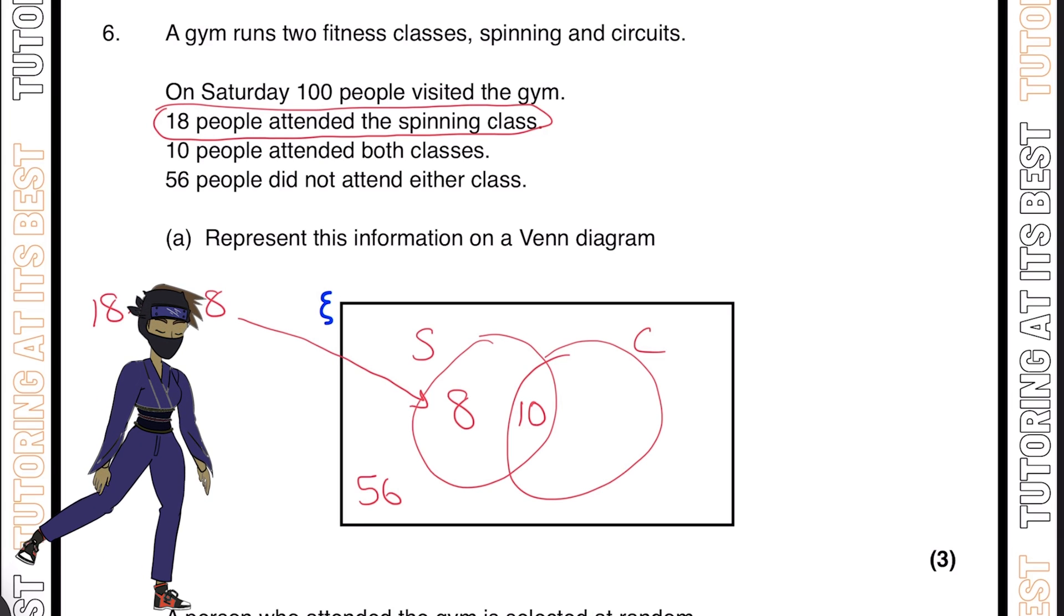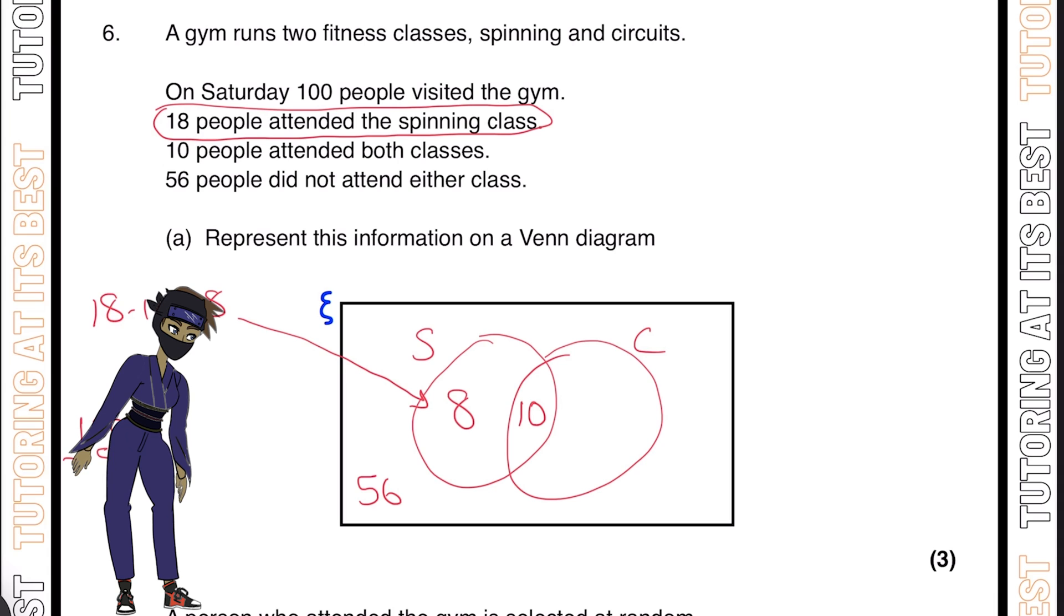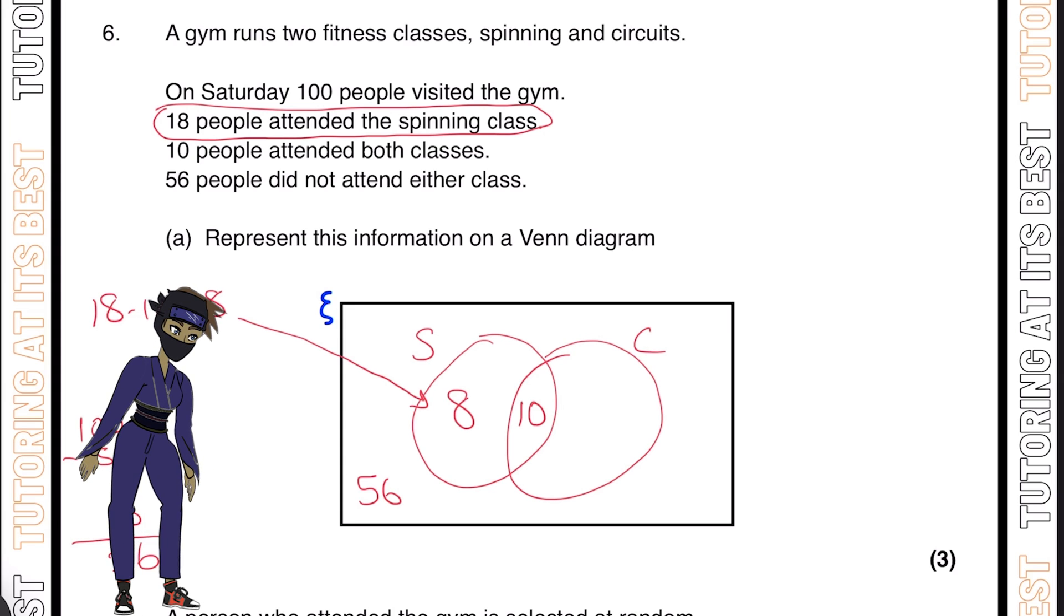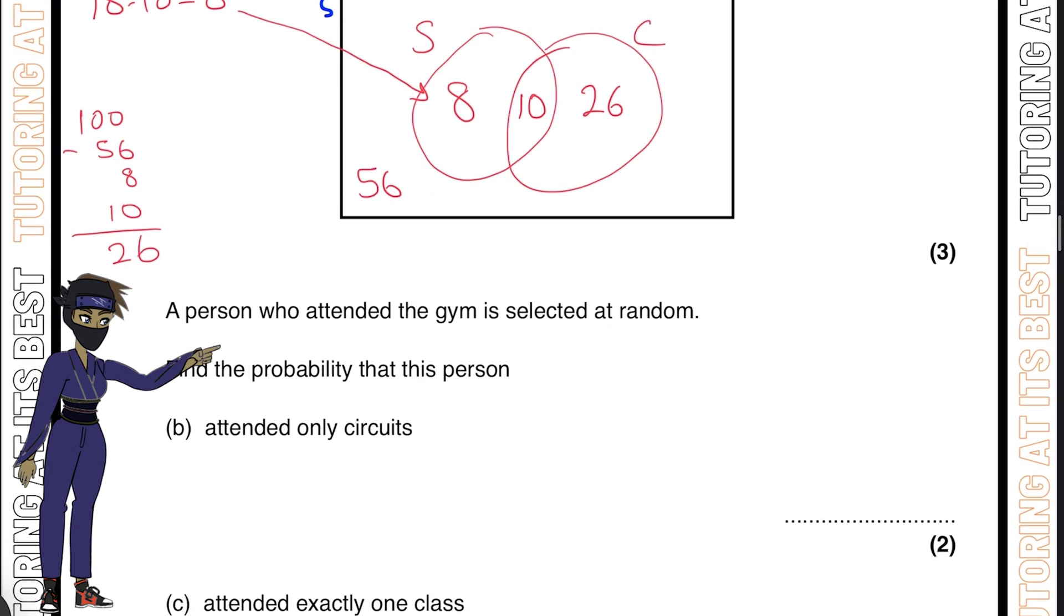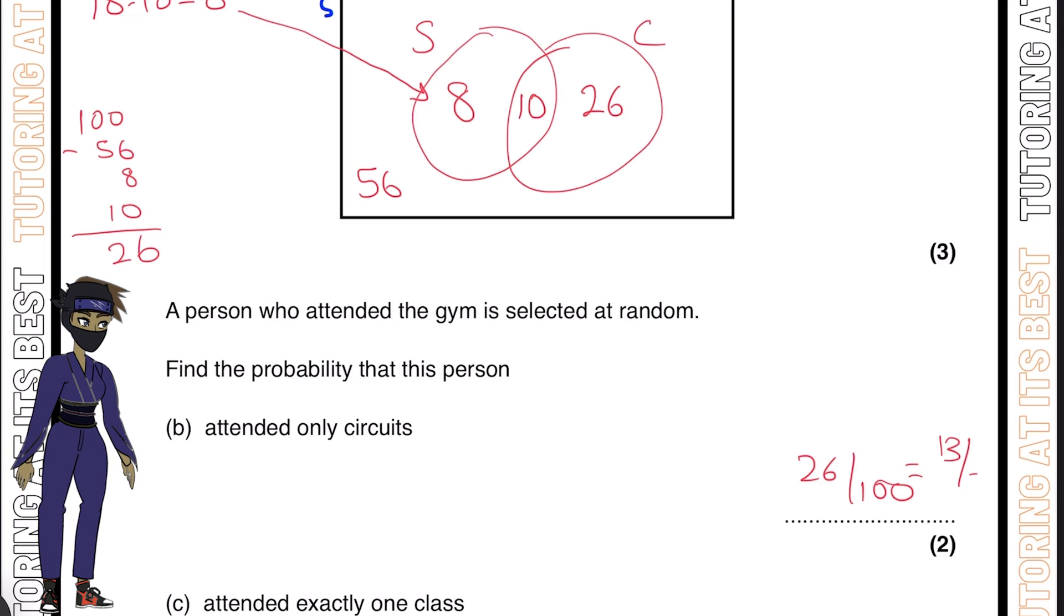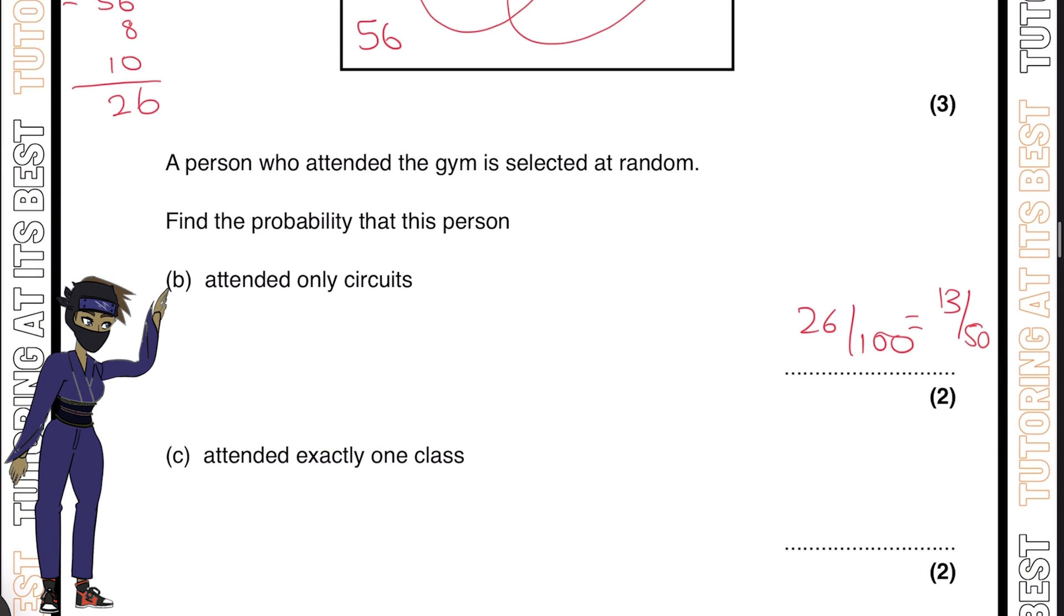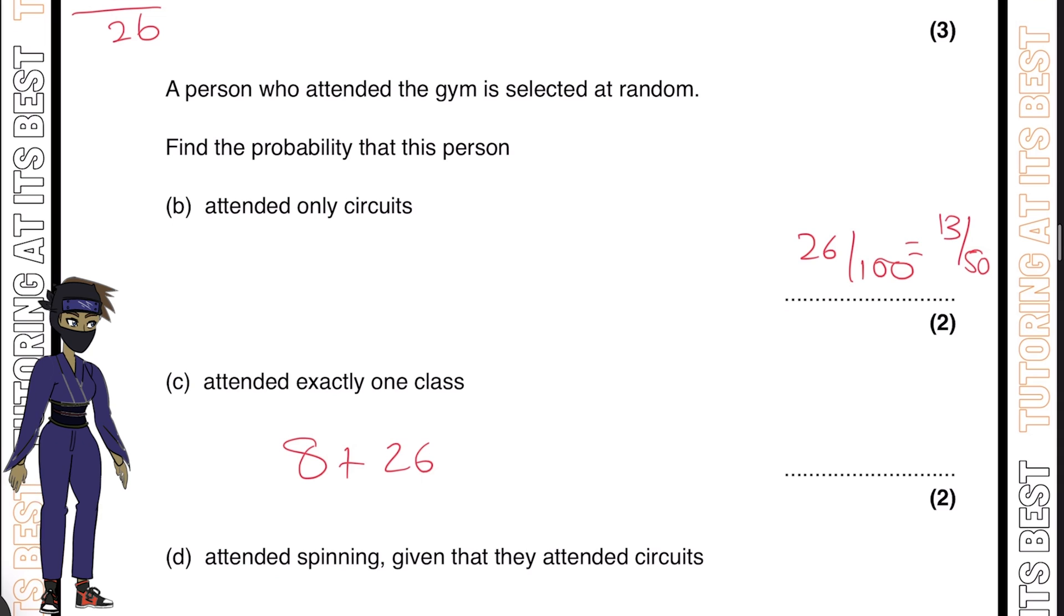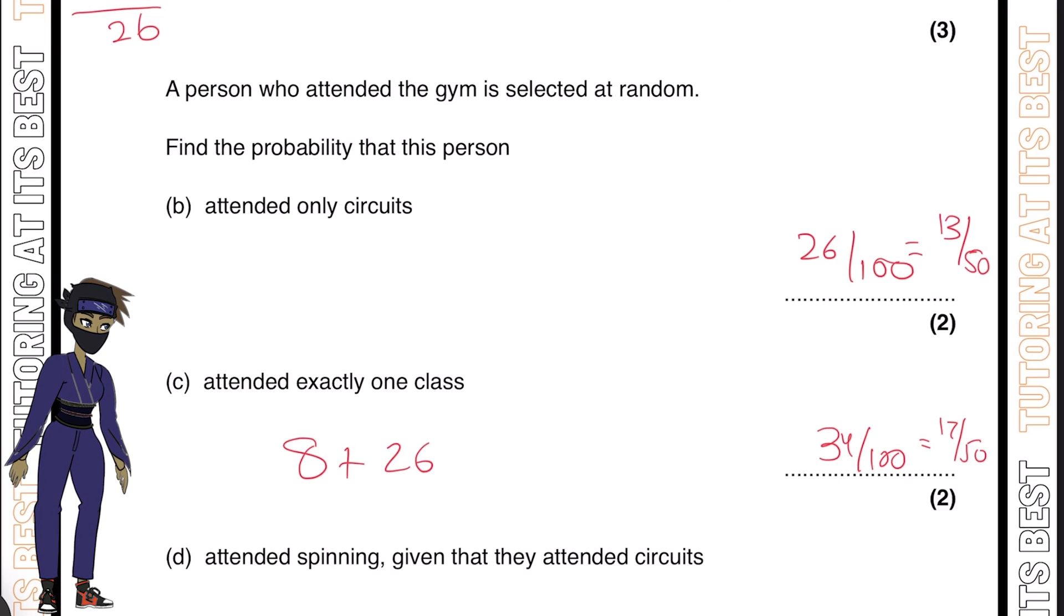How do we find out what's in the circuit area? We know it's 100, so if we have 100 minus 56 minus 8 minus 10, we should be left with 26. That means 26 visited the circuits class, so we can write that as 26 over 100, or 13 over 50. If we look at those that attended exactly one class, that's 8 for the spin class and 26 for the circuits. Adding that together gives us 34 over 100, or 17 over 50.